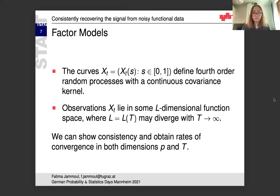Furthermore, we need the curves themselves to define fourth order random processes with a continuous covariance kernel. Really, we just need that to use the Karhunen-Loève expansion to help us. Furthermore, we assume that the observations XT lie in some n-dimensional function space. L, remember the number of factors, and L may diverge with T to infinity. Under these circumstances, which are pretty general, we can show consistency and obtain convergence rates in both dimensions P and T, which is key here because for spline smoothing, P being the number of observations per curve is the only thing that matters because spline smoothing doesn't take all of the curves into account. For us, the estimates improve with growing number of observations per curve as well as growing number of curves.